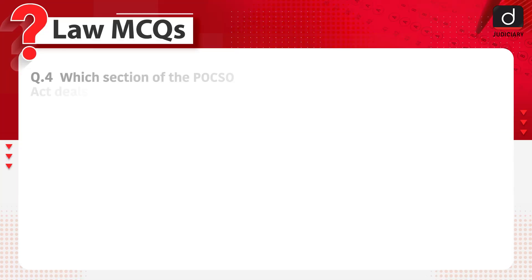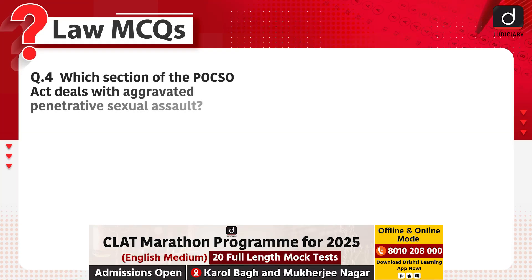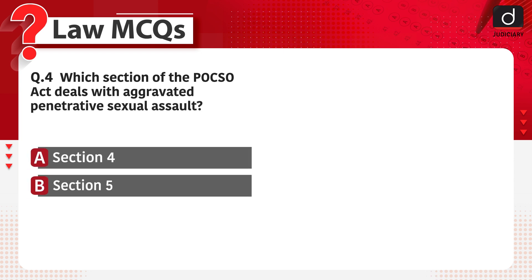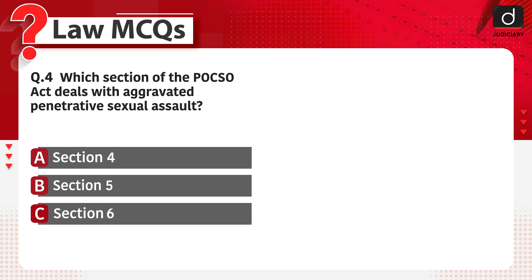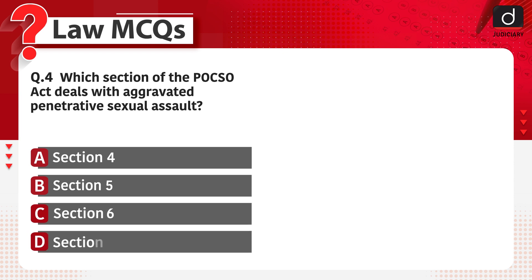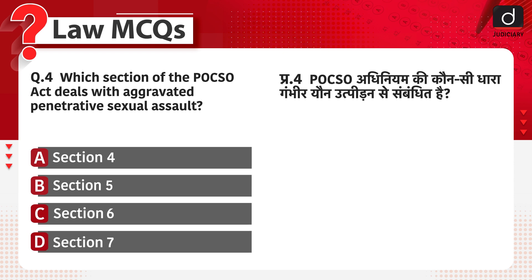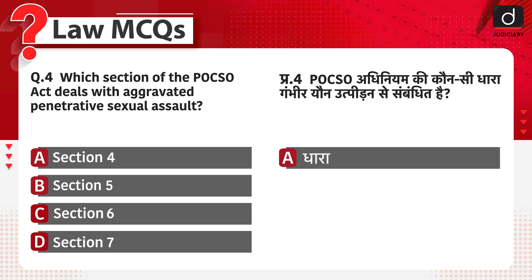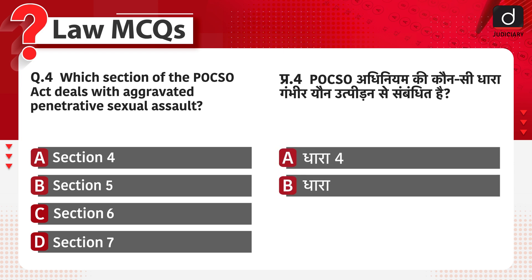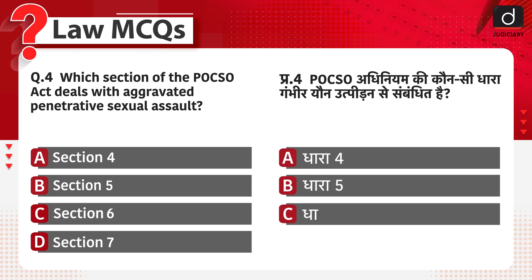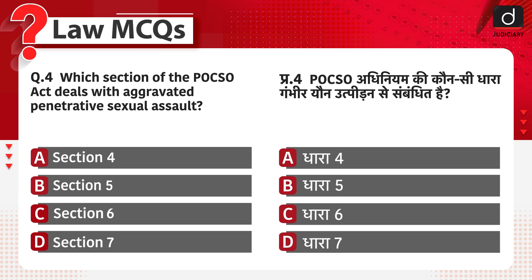Next question: which section of the POCSO Act deals with aggravated penetrative sexual assault? Section 4, Section 5, Section 6, or Section 7? POCSO Adhiniyam ki kaunsi dhara gambheer youn utpeedan se sambandid hai? Dhara 4, dhara 5, dhara 6, yaa phir dhara 7?